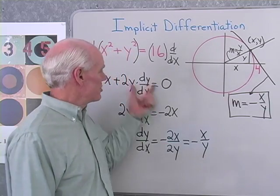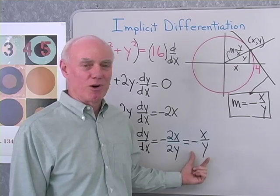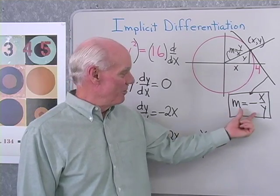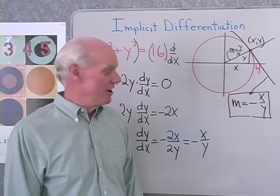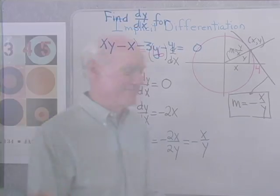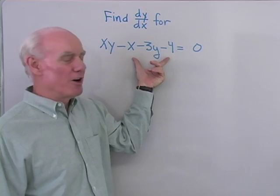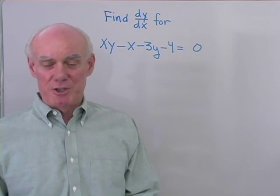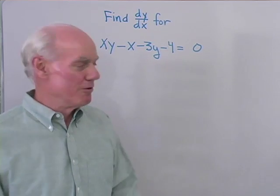So implicit differentiation gives you a little justification for believing that it actually works. We did it geometrically and we did it with implicit differentiation and got the exact same answer. Let's try another example. Here I want to find dy/dx for this function. With this function, y is not given explicitly in terms of x, so I'm going to have to use implicit differentiation.